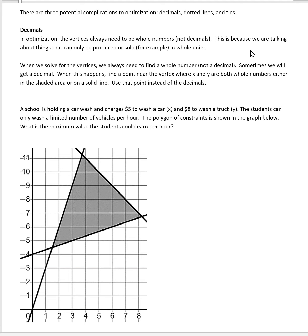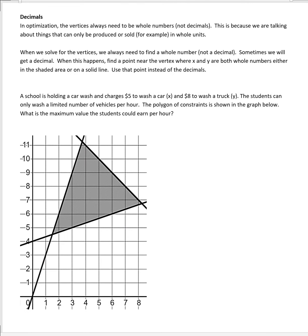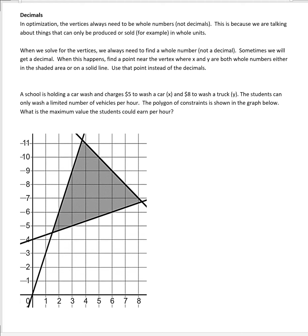The second complication we'll cover today is what happens if we have a dotted line rather than a solid line. So far, all of our optimization questions have had solid lines, meaning greater than or equal to, or less than or equal to. Today we're going to introduce what happens if we have a dotted line — just greater than or just less than. I'm in your workbook on page 48, so let's do this example together.